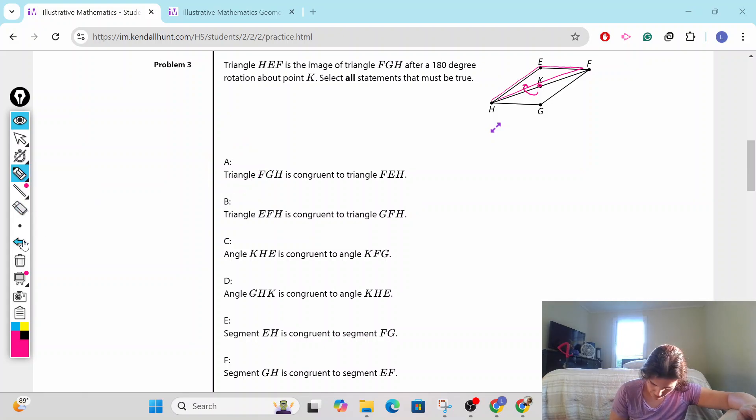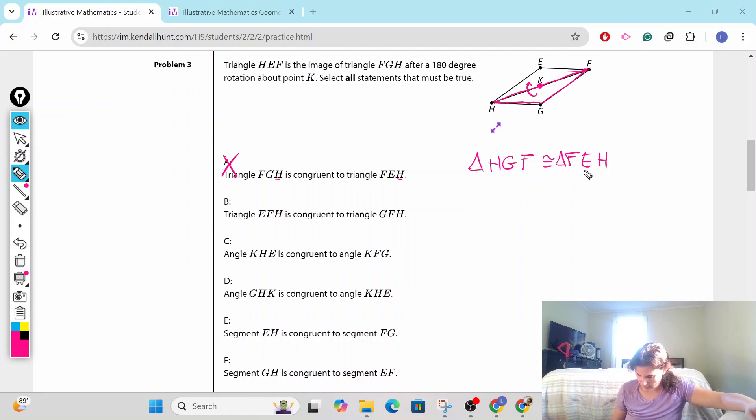Triangle EFH is congruent to triangle GFH. And now I see this is a corresponding figure question, so we're going to double check here. FGH is congruent to triangle FGH. Not necessarily, because he rotated 180 degrees, which means H went on top of F and F went on top of H. In this case, it's saying H corresponds with H, which is not right. So what we're going to need here, HGF is congruent. HGF rotated is going to be congruent to FEH. H has to match with F, G has to match with E, and F has to match with H. We're going to remember that.